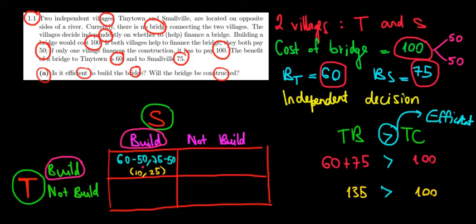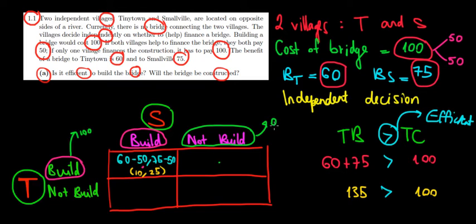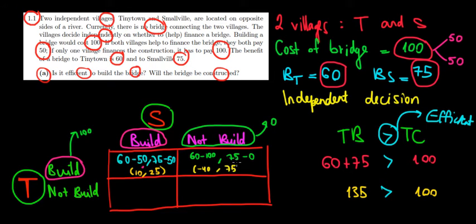Now consider the case where Tiny Town builds but Smallville does not. Tiny Town incurs the full cost of 100, so its net benefit is 60 minus 100 equals minus 40. Smallville benefits from the bridge — getting 75 — but pays nothing, so its payoff is 75 minus 0 equals 75. The payoff here is (minus 40, 75).